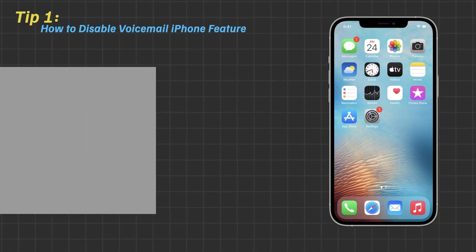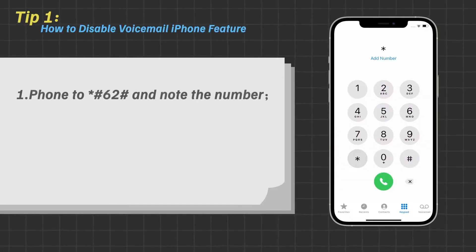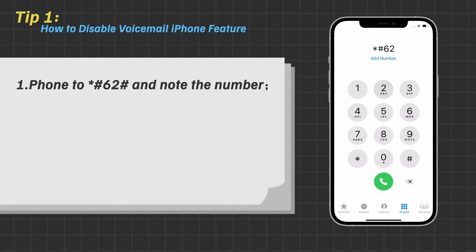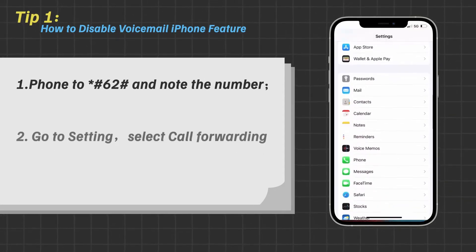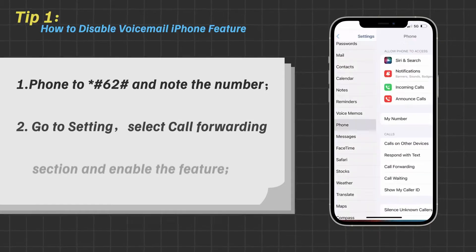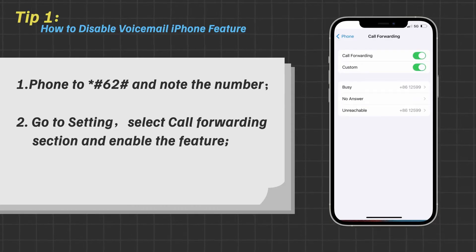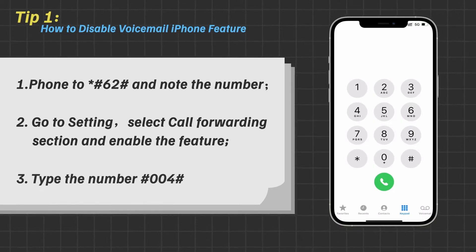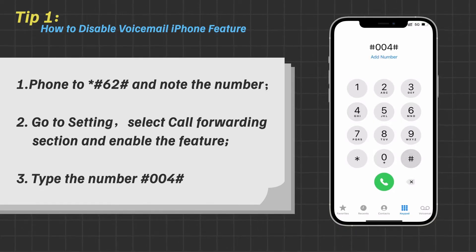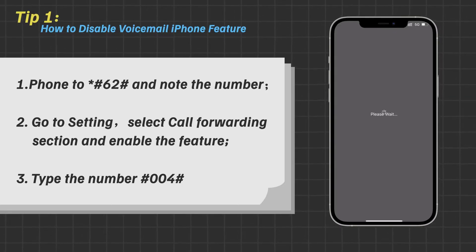Tip 1: How to disable the voicemail iPhone feature. Step 1: Phone to star-pound-62-pound and note the number. Step 2: Go to Settings, select the Call Forwarding section, and enable the feature. Step 3: Type the number pound-0-0-4-pound and then call, so that you are able to turn off voicemail on iPhone.